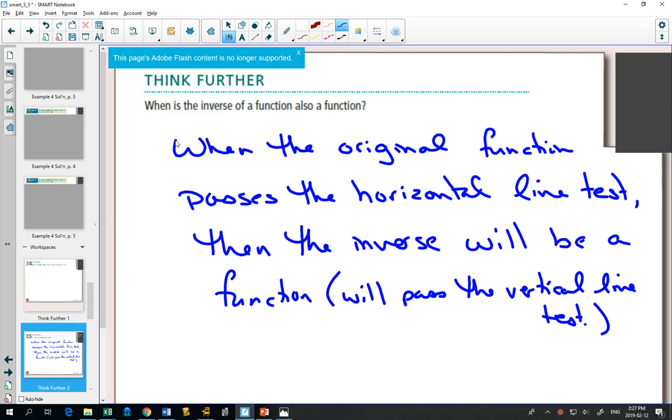So some examples, like a parabola, doesn't pass the horizontal line test. If you want to find the inverse, the inverse won't be a function unless we do something to restrict the domain or only take part of the parabola.